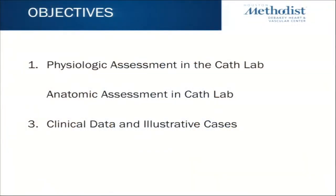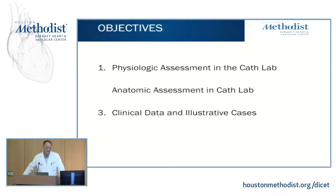Somehow, people do end up in the cath lab without one of these elegant tests, even in 2017, so we have to figure out what to do with them. We'll go through some basic things we can do in the cath lab. The first and most important, really what's become the gold standard of assessing coronary artery disease, is physiologic assessment. We'll talk about FFR as well as IFR and go over some of the clinical data. We've always had anatomic assessment with invasive angiography, but we have complementary anatomic assessments with intravascular ultrasound and OCT, and we'll look at a few case examples of how we utilize these anatomic assessments in 2018.